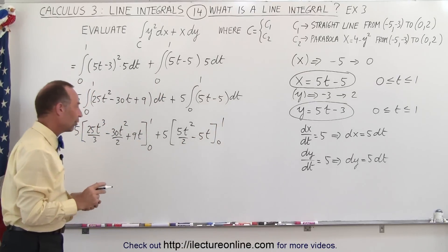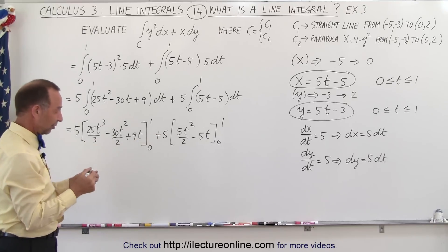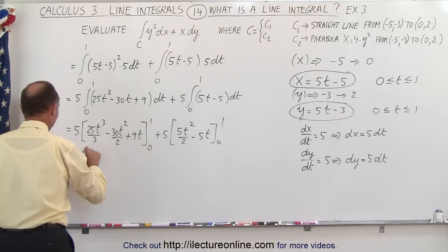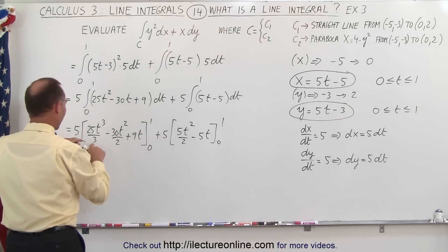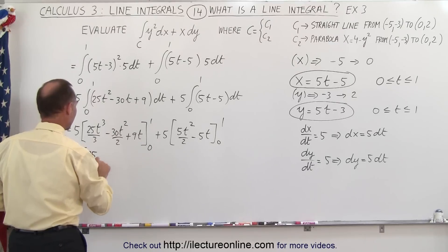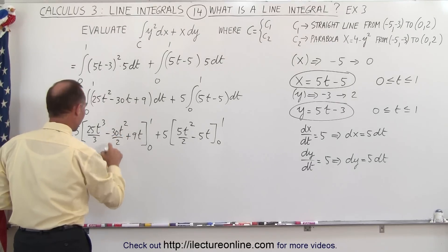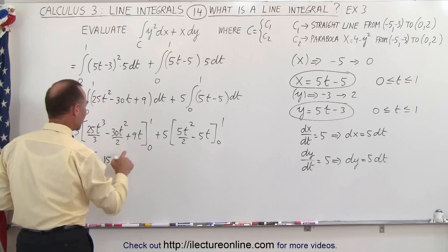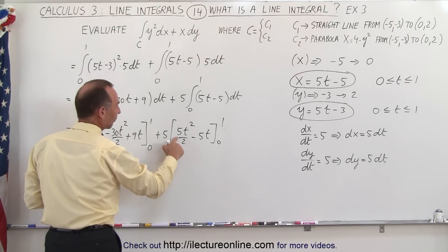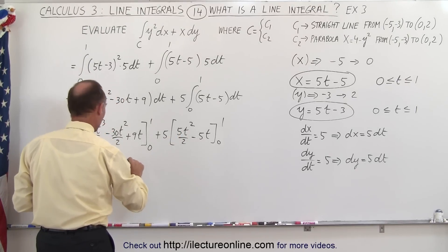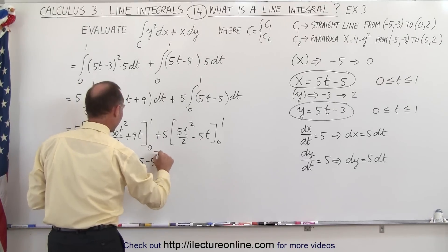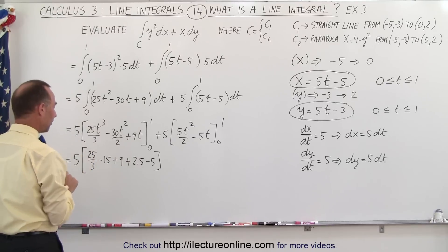And you can see then, of course, that if I plug in the lower limits, everything will go to 0, so I only have to plug in the upper limit, and add everything up. So this is equal to 5 times, I'm going to pull out a 5 here from both, and then here when I plug in an upper 1, I get 25 divided by 3. Plug in a 1 here, I get minus 30 divided by 2, which is minus 15, and here I get plus 9, and here I will get 5 halves times 1, which would be plus 2.5, and here it would be minus 5. And everything multiplied times 5.